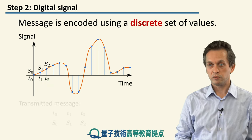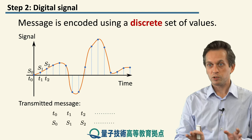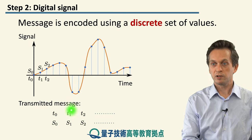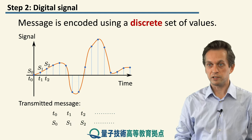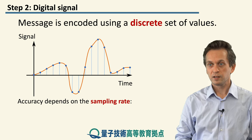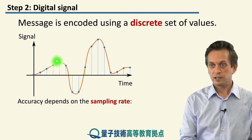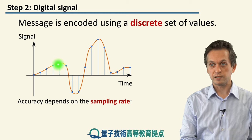So really, what we are now transmitting is not the signal itself — what we are transmitting is more akin to a table: at this time we have this value, at the next time we have that value, and so on. This is the essence of sending digital signals. You can already see from this picture that the accuracy with which we can reproduce the signal depends on how often we look and measure the signal, which is known as the sampling rate.